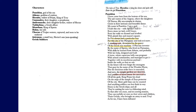In this version, the characters speak their names in bold and what they say beneath that. Here we have Poseidon — he's the god of the ocean and patron of Troy — and he says: 'I have come here from the bottom of the sea, the salt waters of the Aegean, where the daughters of Nereus, fifty sea nymphs in chorus, circle in their intricate and beautiful dance. My name is Poseidon, I am a god. I built this city with Apollo, who is the god of light. I built it every stone — we laid every tower, even the walls we dressed and leveled with plumb line and mason's square. So I've always had a particular love for this city of the virgins.'